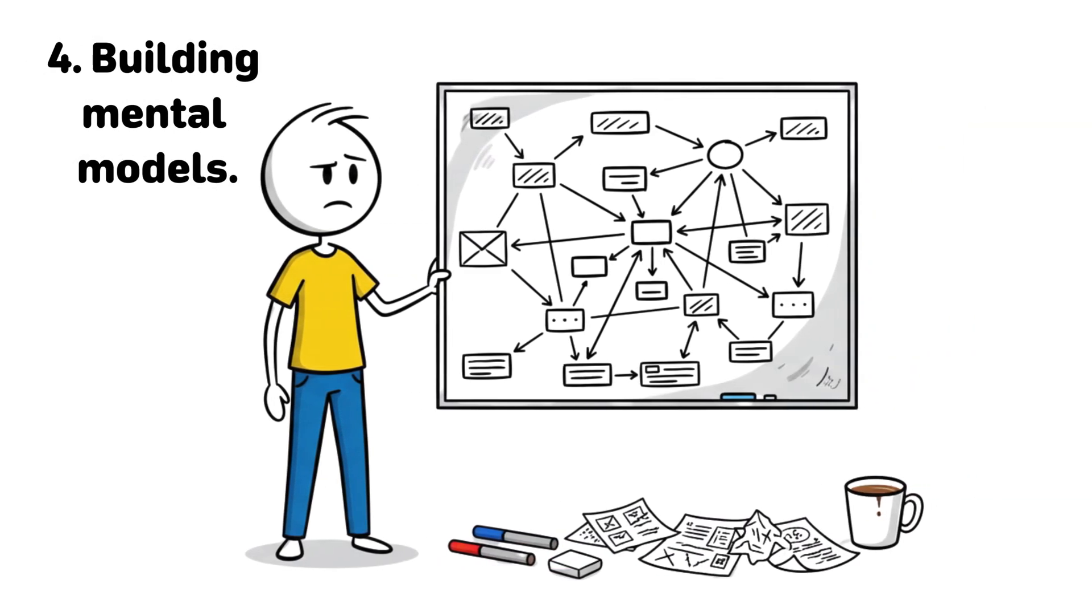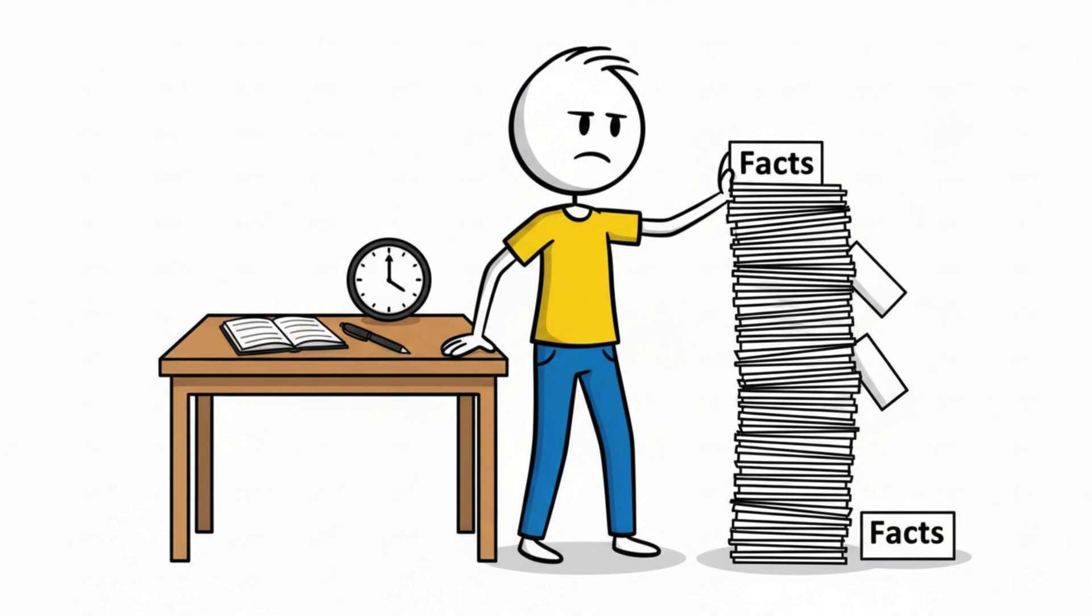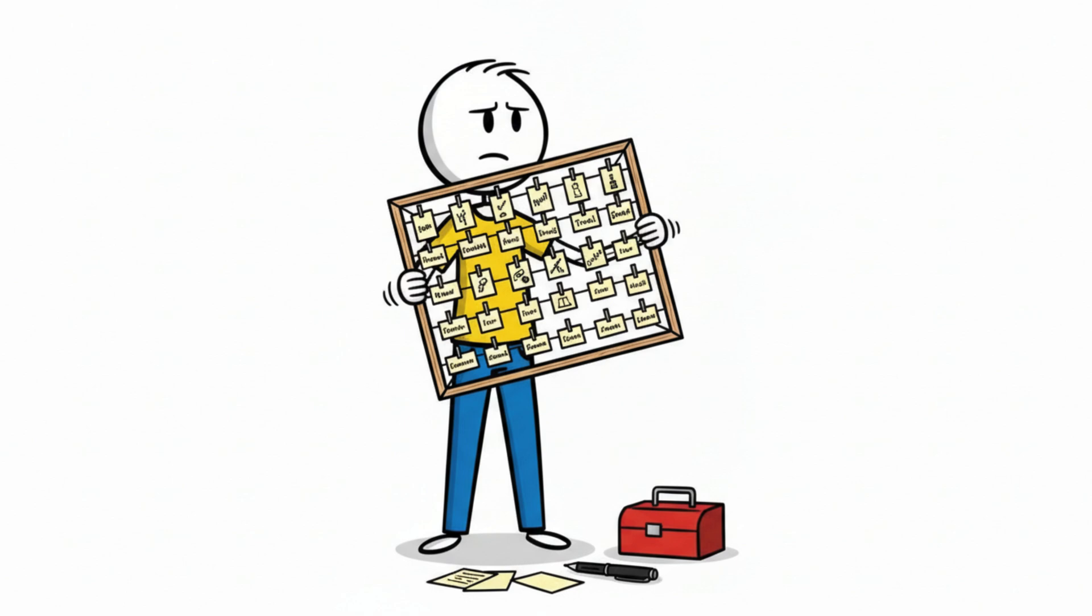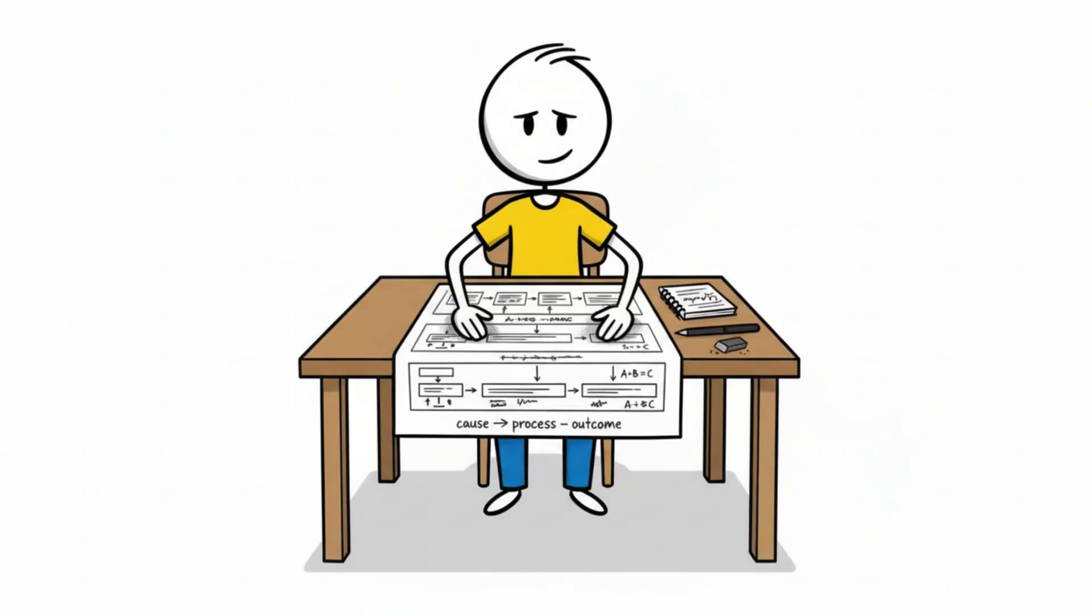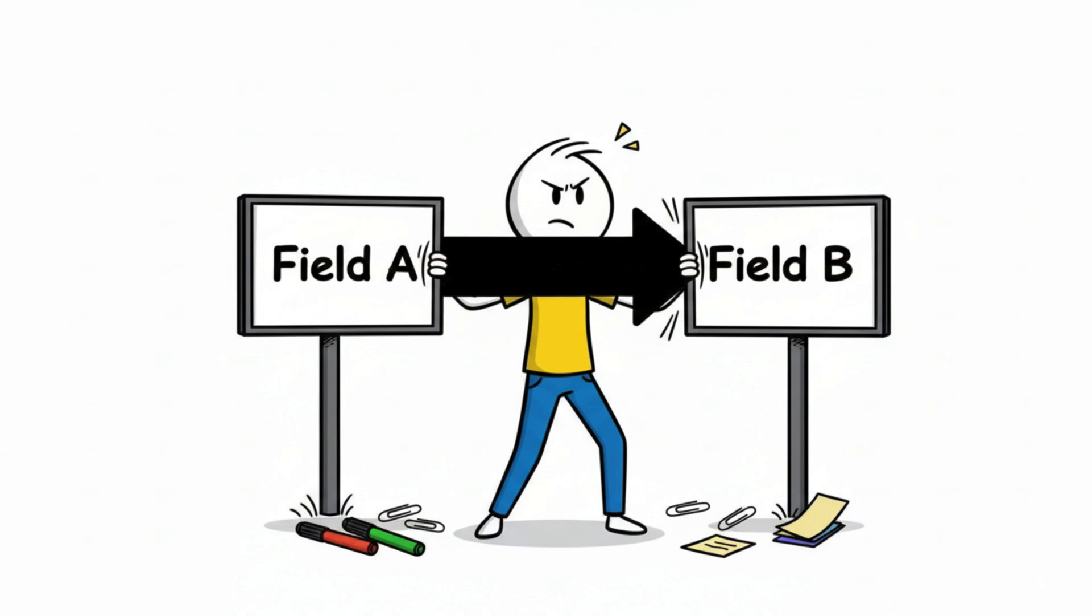Building mental models. People with high cognitive performance don't just know facts. They understand systems. They carry frameworks, mental models, that let them predict what will happen, explain why something happened, and transfer insight from one area to another.